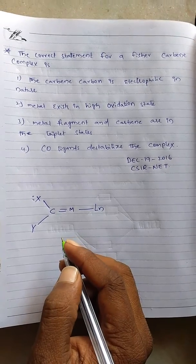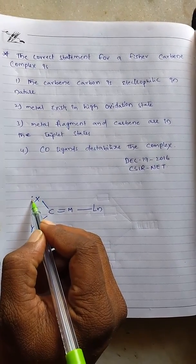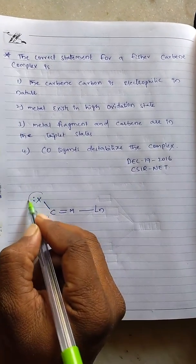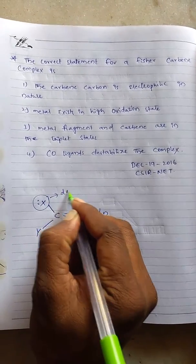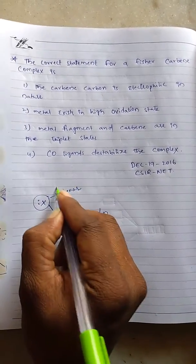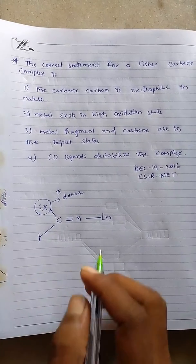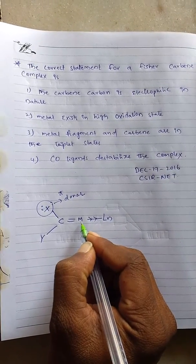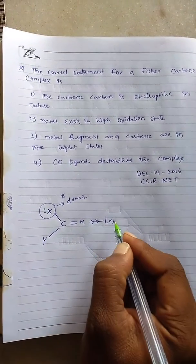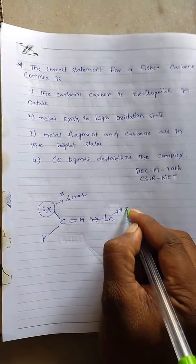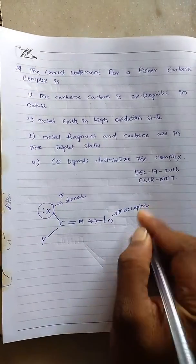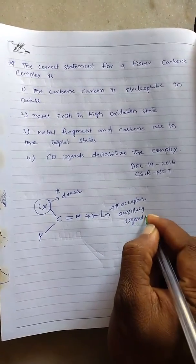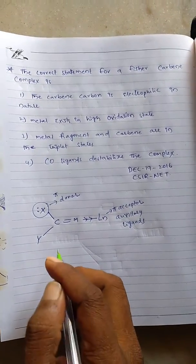Here, this lone pair containing ligand on carbon should be a donor. That means it is a phi-donor. Then the ligands which are attached to the metal atom should be phi-acceptor auxiliary ligands.